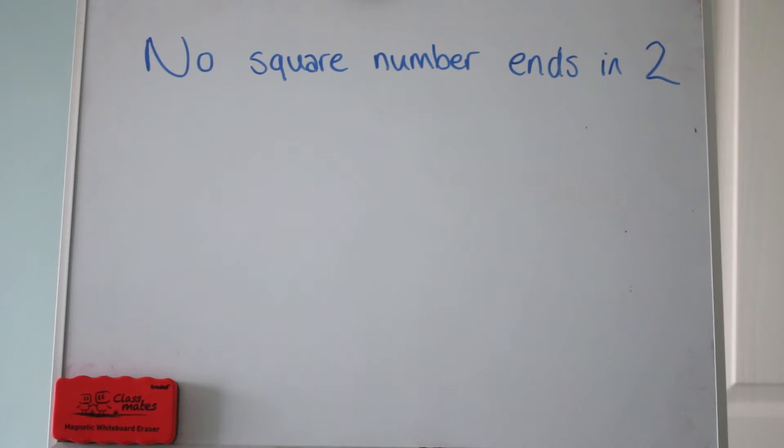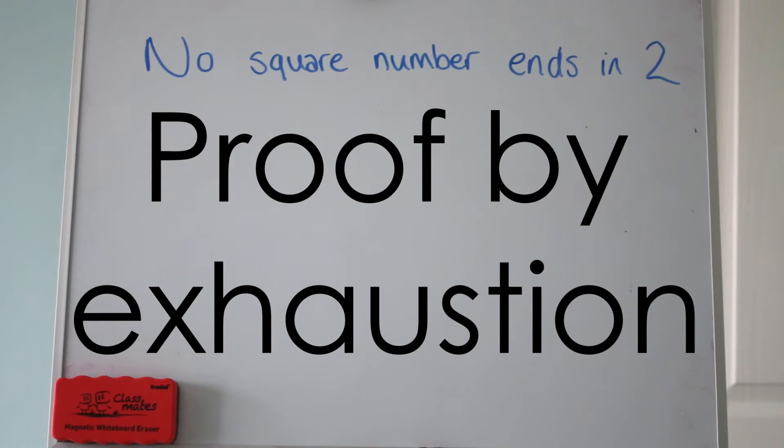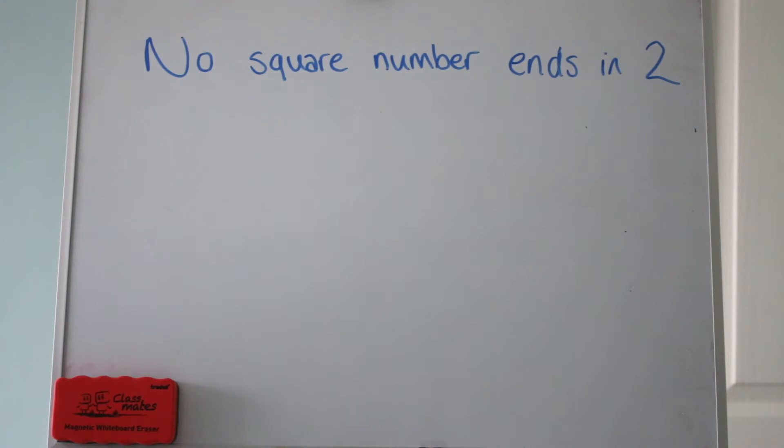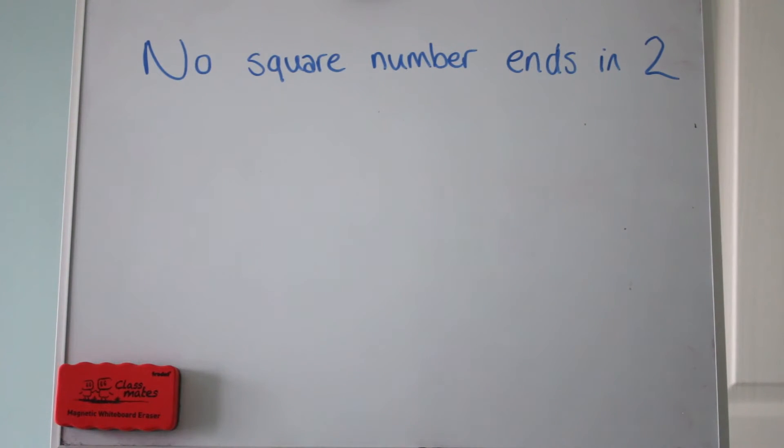That was disproof by counter example. Next we're going to look at proof by exhaustion. This time we're going to prove the statement is correct, and we're going to do it using proof by exhaustion. Now proof by exhaustion means you run through all the examples there are and just show that all of them work. So you can only use this when you can break all the cases down into a finite manageable number that you can look at. Here we've got our statement: no square number ends in 2. I'll show you how you can break this down into a finite number of cases.